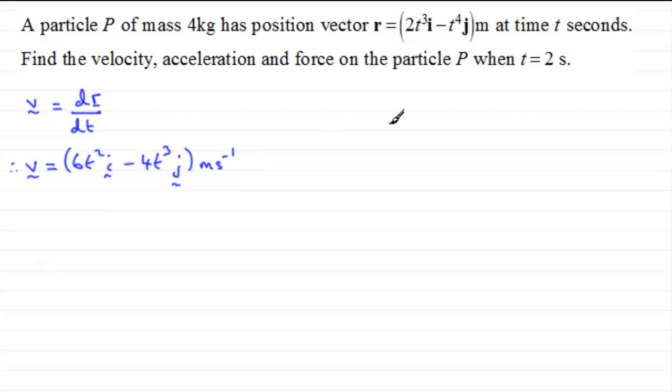Now, we're asked to find the velocity when t equals 2 seconds. So all we need to do is substitute t equals 2 into our equation here. So when t equals 2, v is going to equal 6 times 2 squared in the i direction, minus 4 times 2 cubed in the j direction.